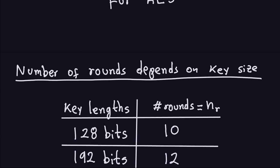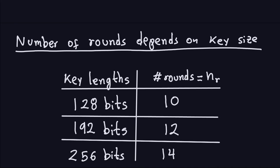We have to recall that the number of rounds depends on the key size. There are three key sizes for the AES: 128 bits, 192 bits, or 256 bits. Depending on the key length, you will have a number of rounds. For 128 bits you will have 10, for 192 we'll have 12, and for 256 we'll have 14 rounds. We have to discuss individually what the key schedules are for each individual key length because it depends on the number of rounds.